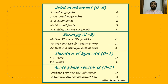For acute phase reactants, if CRP and ESR are normal, the score is 0, and if highly positive, the score is 1. For duration of symptoms, if below 6 weeks, the score is 0, and if above 6 weeks, the score is 1. After totaling the score, if it equals or exceeds 6, we can confirm the case as rheumatoid arthritis. If below 6, reassessment should be taken after a period.